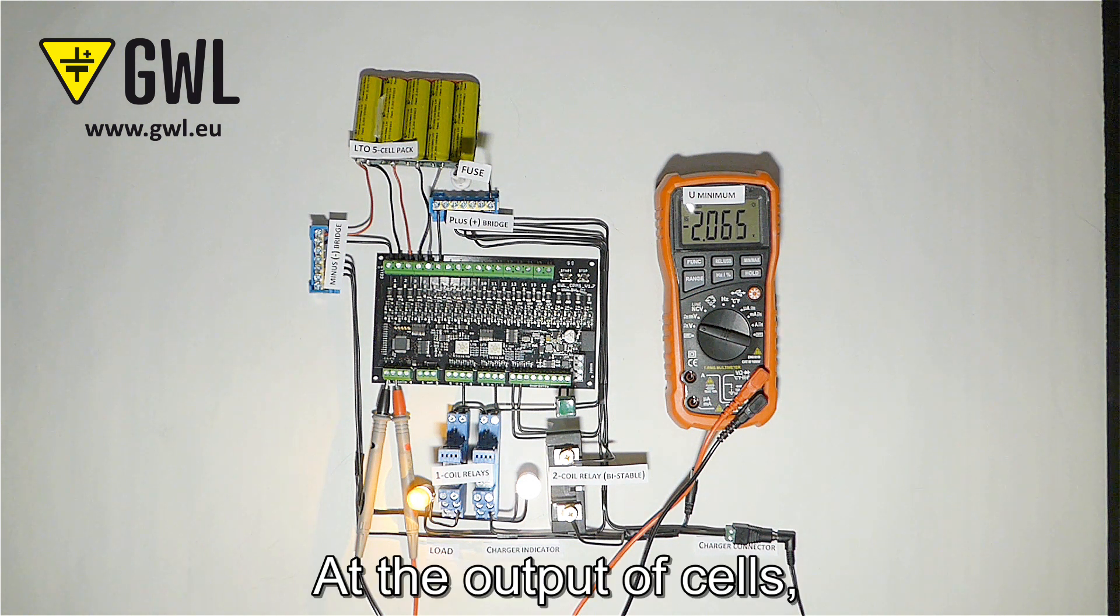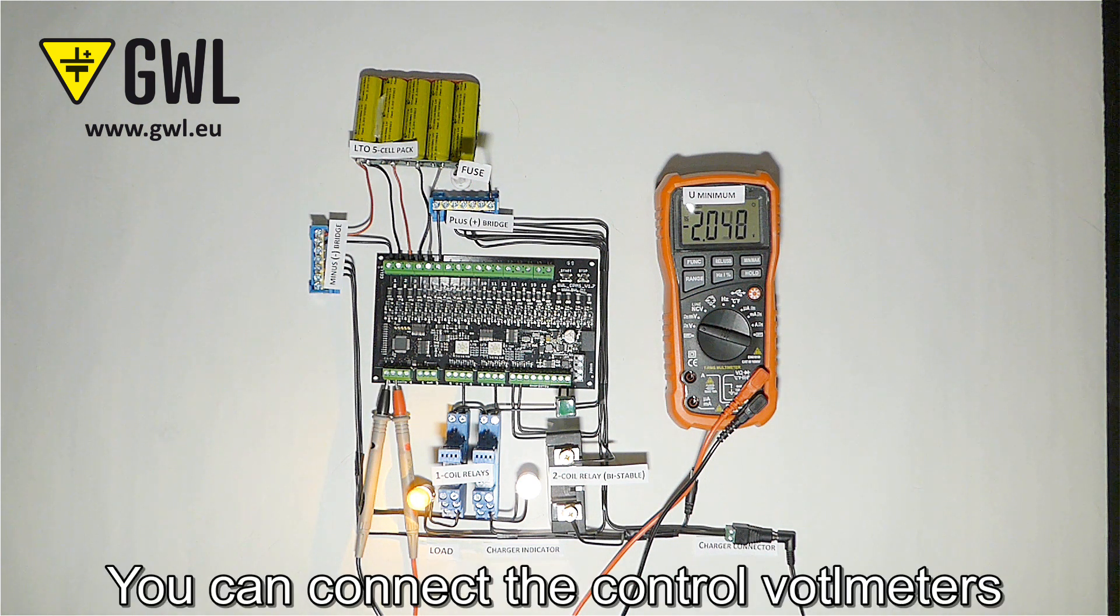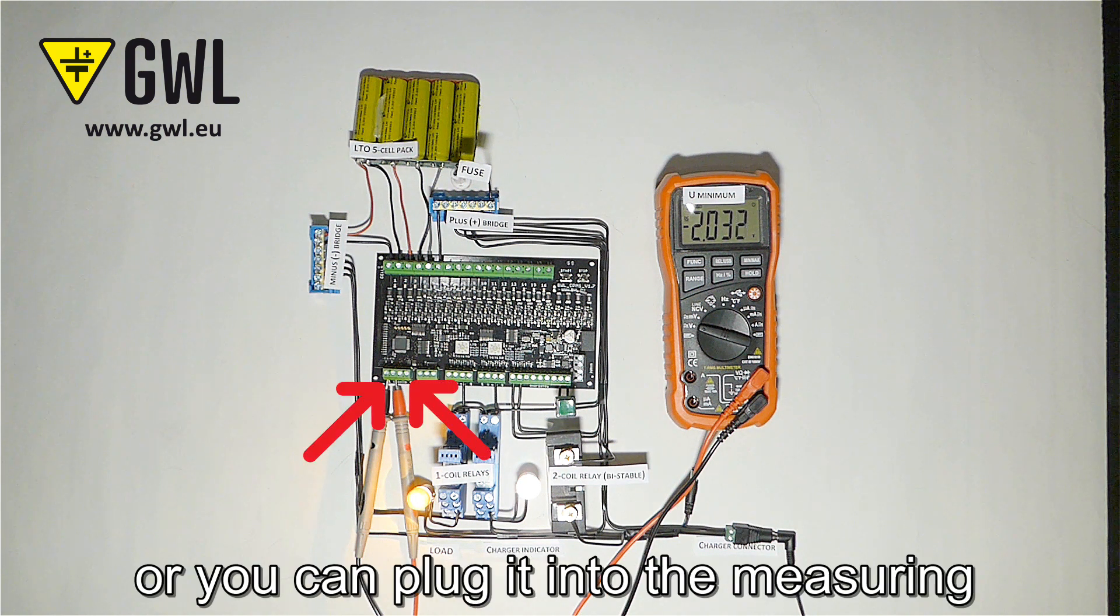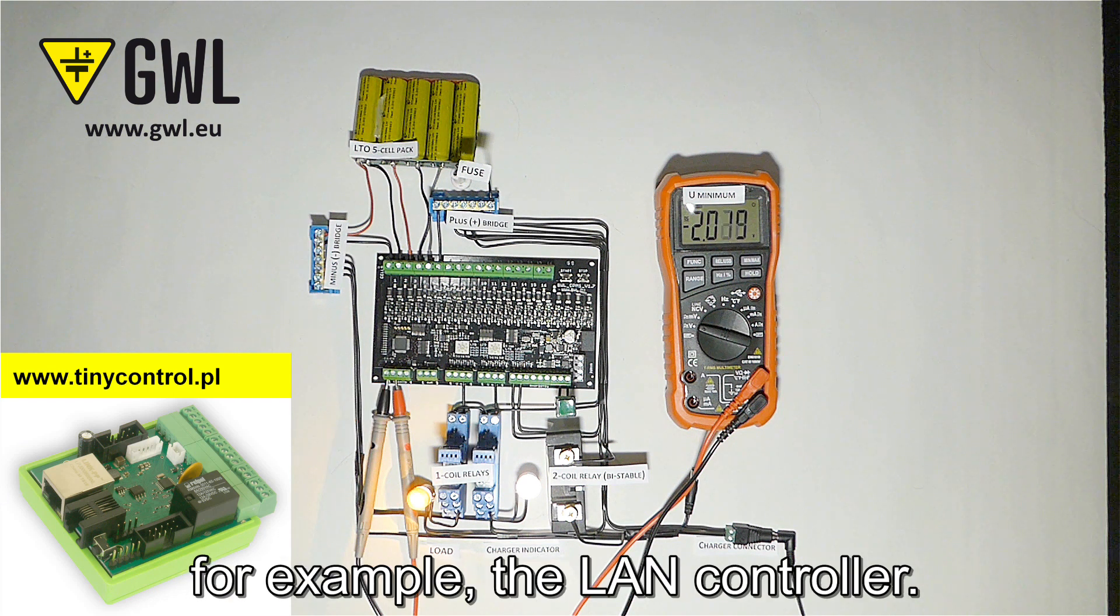At the output of cells you can now see the voltage of the weakest cell. You can connect controlled voltmeters directly to these outputs or you can plug it into the measuring analog inputs of another system, for example the LAN controller.